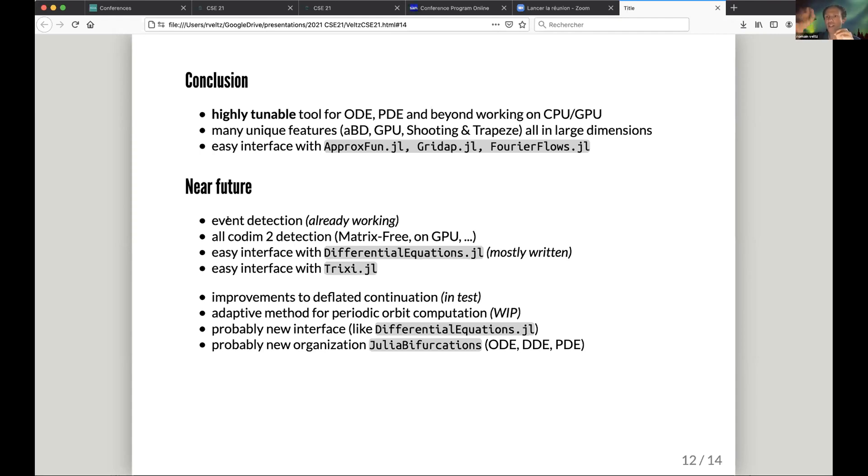I will just mention the future. In the near future, there will be event detection, so you can run along a branch and detect when, I don't know, crossing of an event. And from this, all codimension-two detection will be done by the end of the year, period-two and that will work for matrix-free GPU. I want to also rework the interface with DifferentialEquations.jl. I wrote it a long time ago, but I think now it's broken. And I would like to give a shot to an interface with Trixi.jl, which is a very nice PDE software with adaptive mesh refinement.